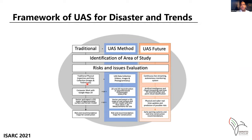After the traditional data processing, risk and recommendation maps are generated for construction problems or other issues. The new proposed methodology keeps the first two steps but then uses the drone with images, videos, and photogrammetry survey to reconstruct 3D digital surface models and digital terrain models to accurately understand the terrain and identify the problems and risks in that specific area.